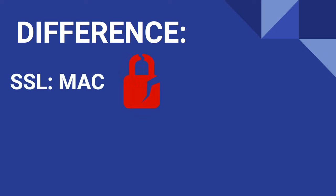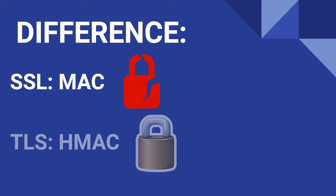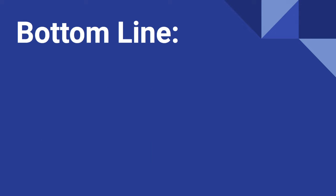SSL uses something called a message authentication code, whereas TLS uses a hashed message authentication code. The difference between these two functions gets pretty far into the weeds, so it won't be covered here. The key thing to know is that HMAC is more secure because it uses a secret key in the hashing function that it performs.